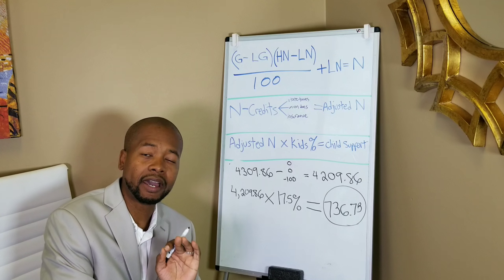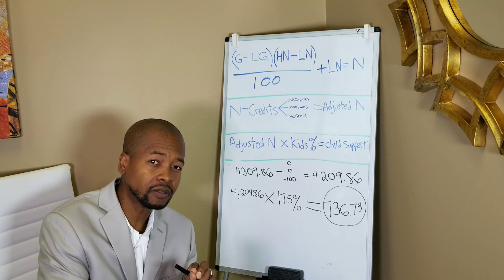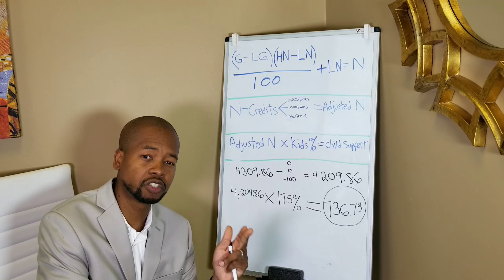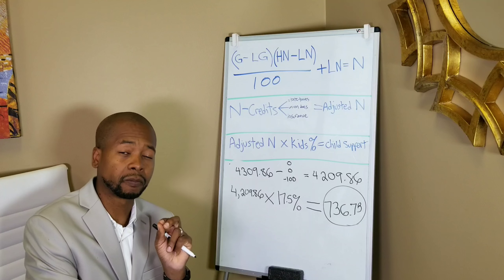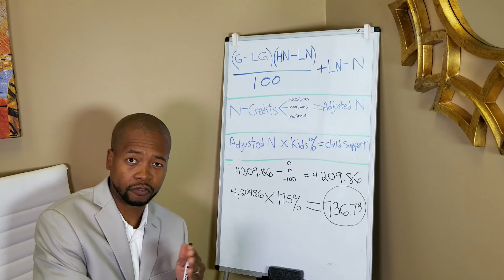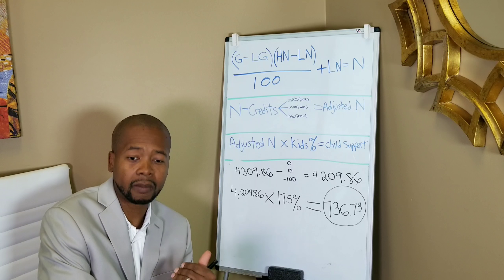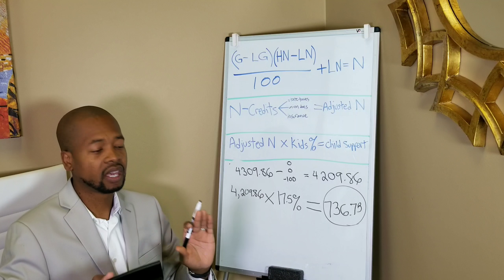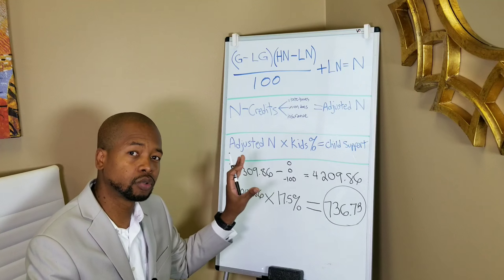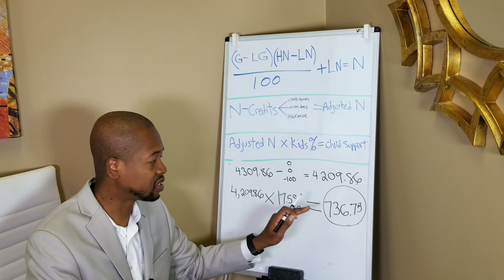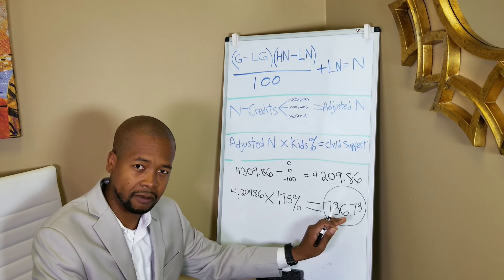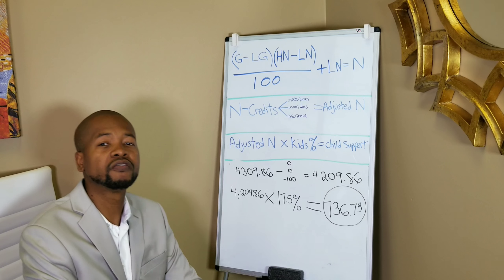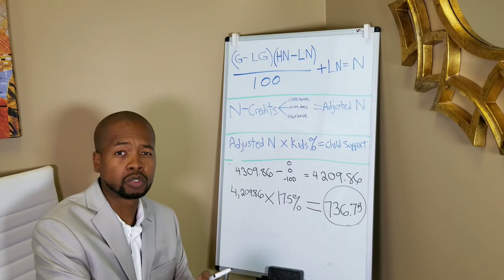So from a gross income of $5,332.59, you arrive at a monthly child support amount of $736.73. I used the tax chart free online at the Attorney General's website, the percentage chart available for free online and on my website, and a calculator. That's it — no other tools needed to get the correct child support amount.